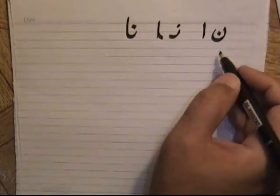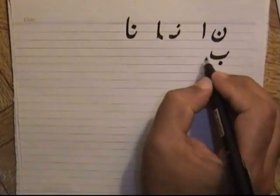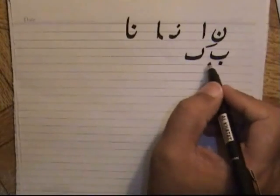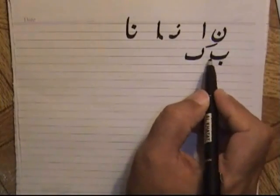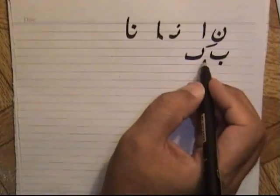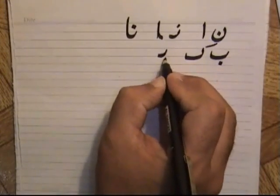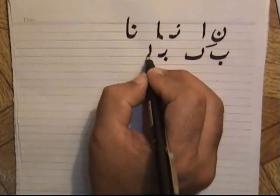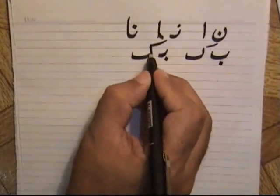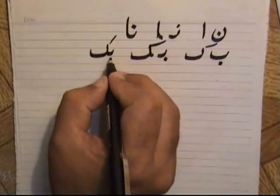Similarly, we have the letters bay and kaaf. Both bay and kaaf are connectors. This is the initial position of bay and this is the final position of kaaf, so we will have one connector here. They will be written together as bay-kaaf: 'bak'. If we use a different vowel, it can become 'book'.